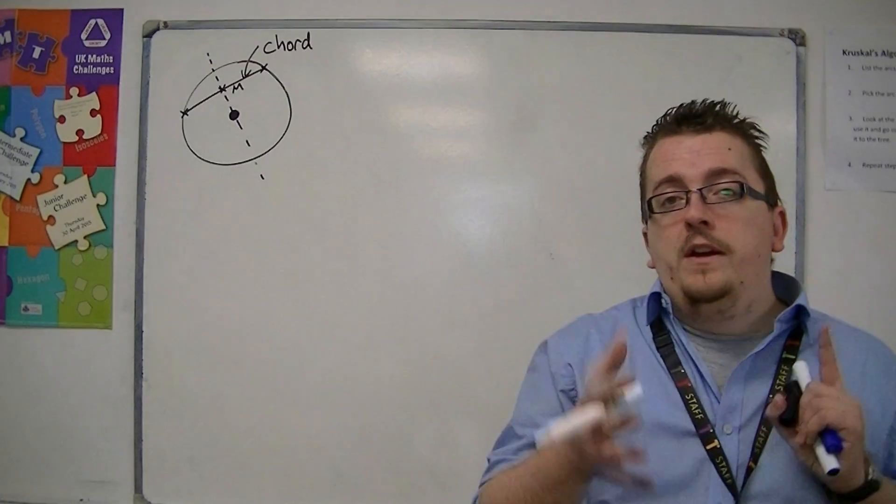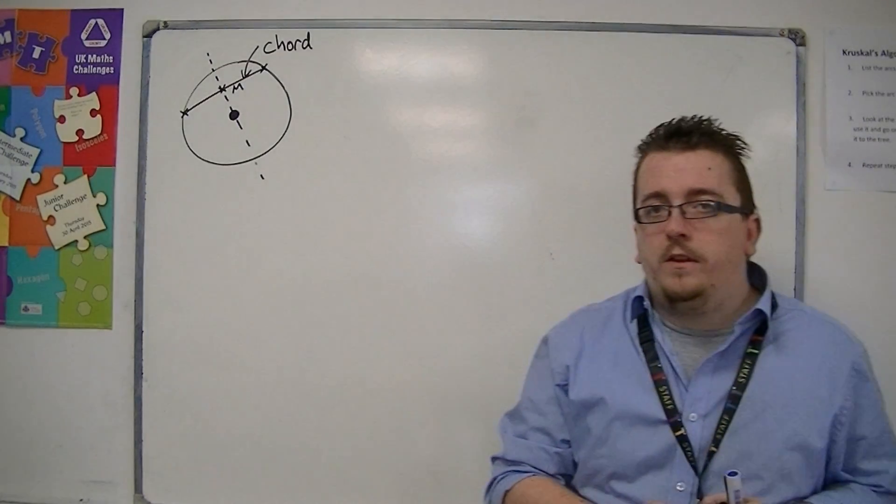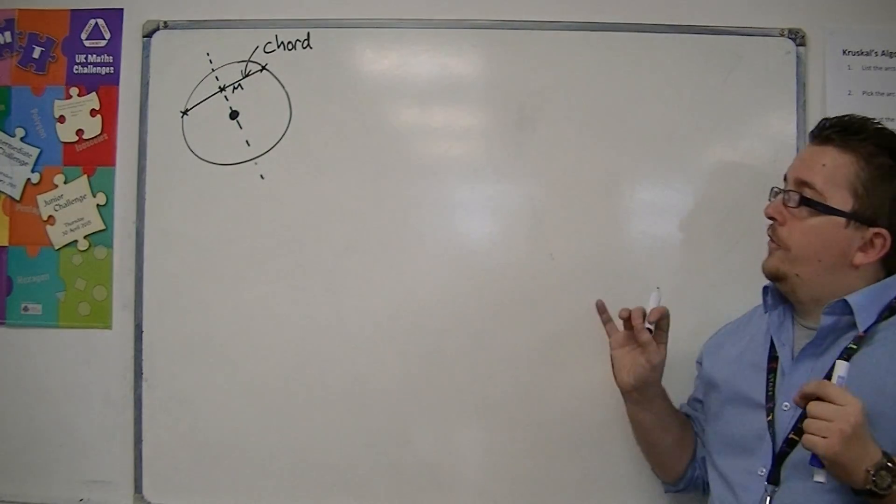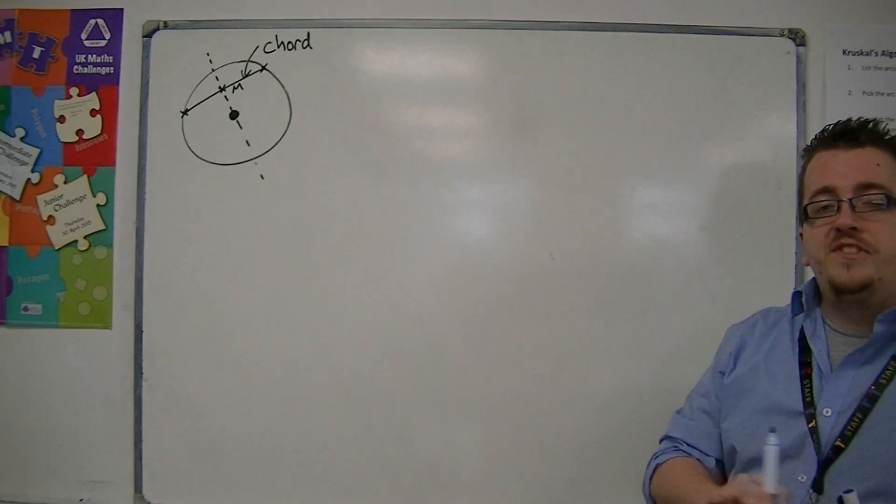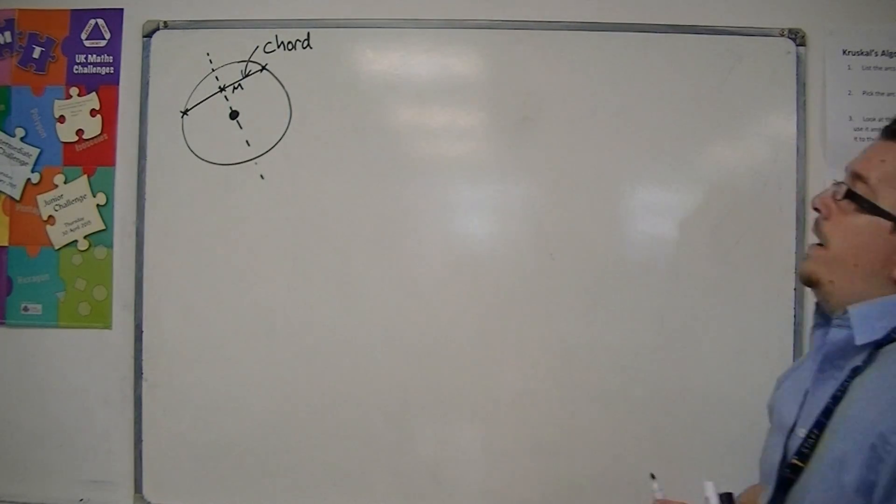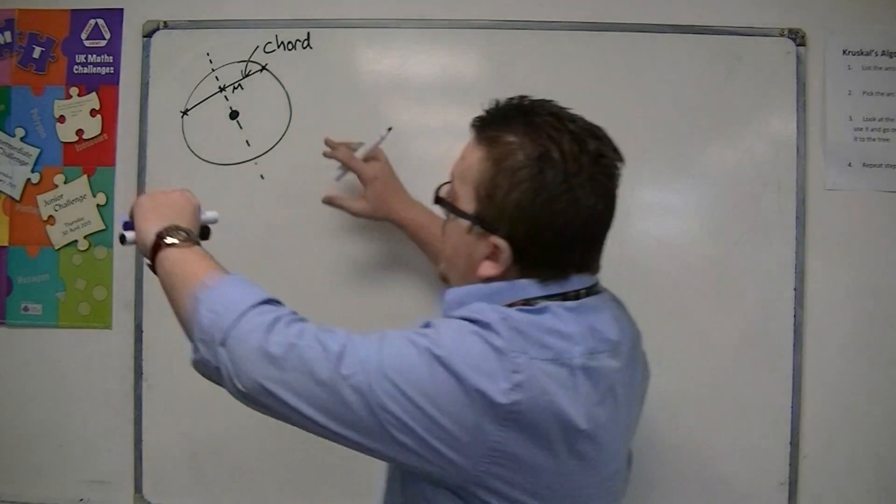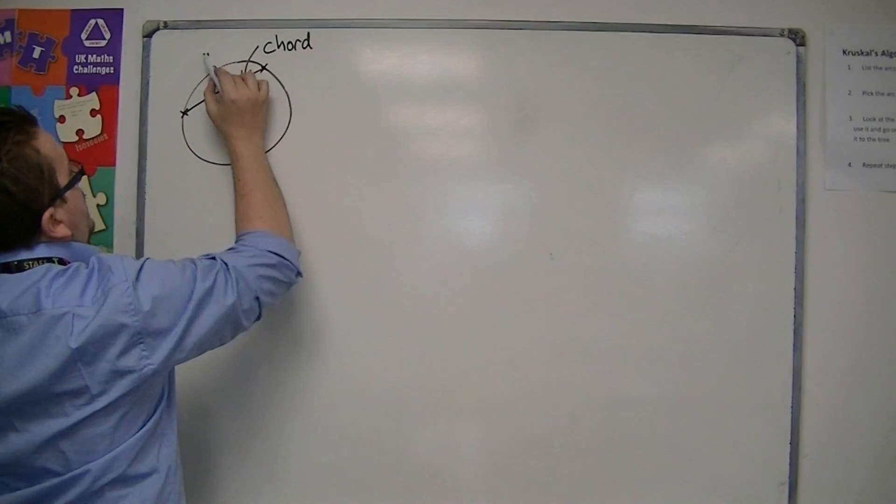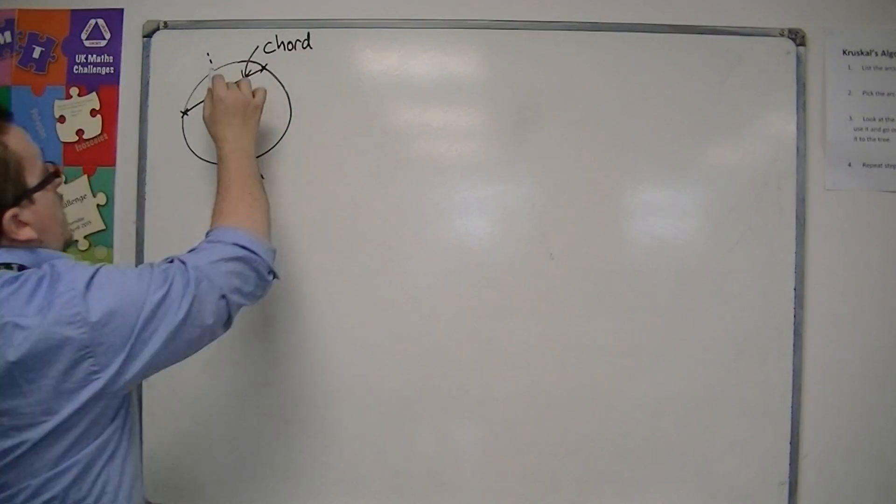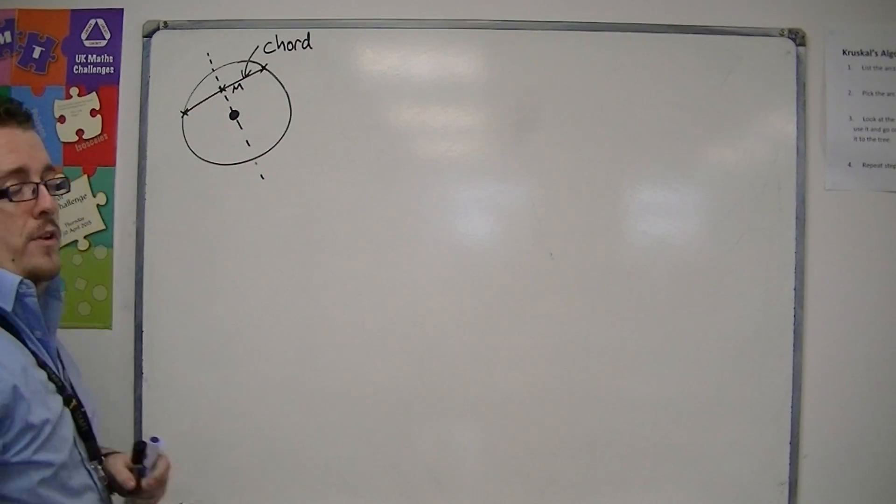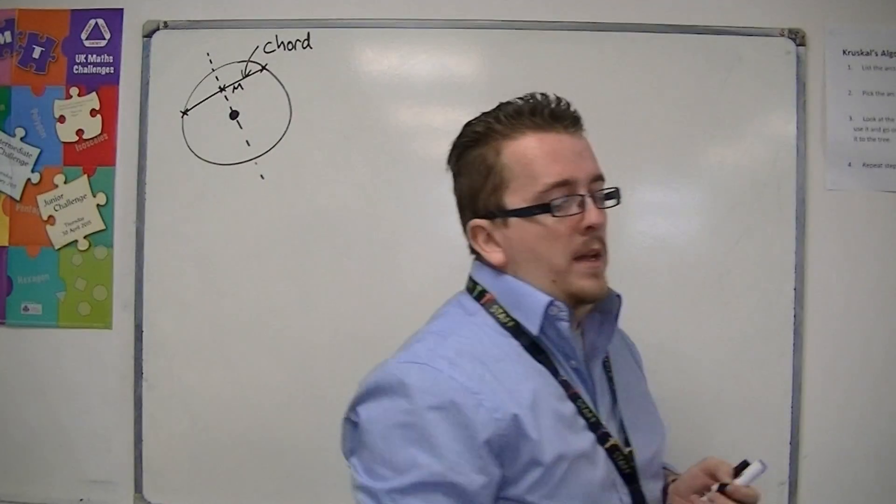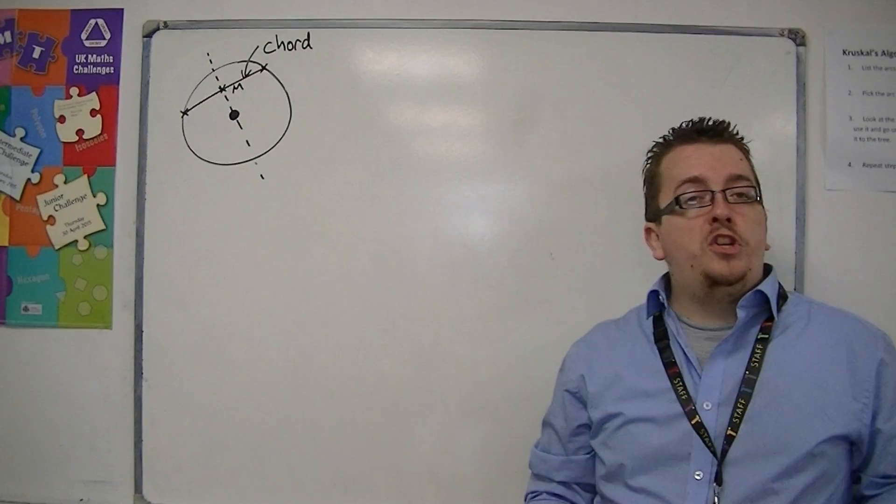Now, the special type of chord is obviously the diameter. So that's the special chord that travels through the centre of the circle. But any old chord, if you've found that midpoint and you've found the perpendicular line going through M, then that also travels through the centre of the circle. And you can use this information to your advantage.